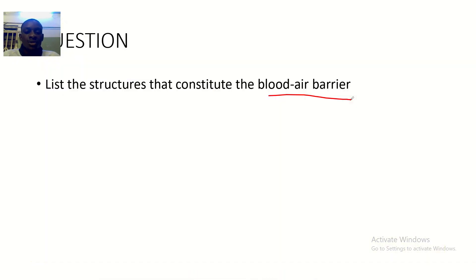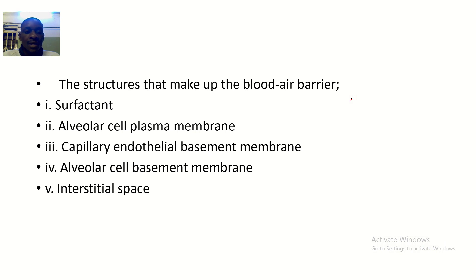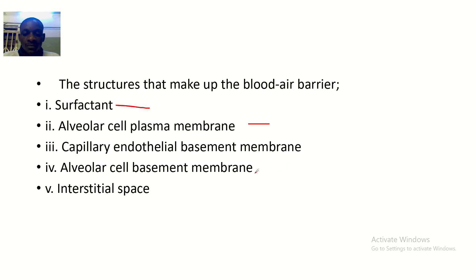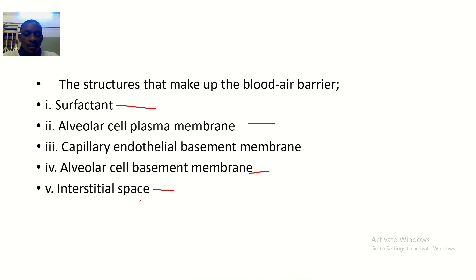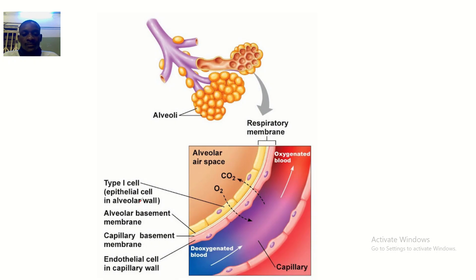The question is: what are the structures that constitute the blood-air barrier? The blood-air barrier is made up of surfactant, the alveolar cell plasma membrane, the capillary endothelial basement membrane, the alveolar cell basement membrane, and the interstitial space.